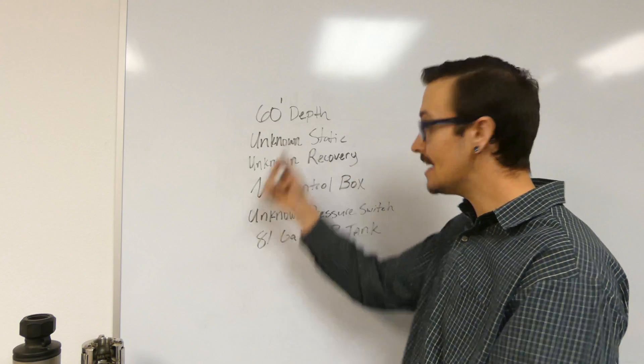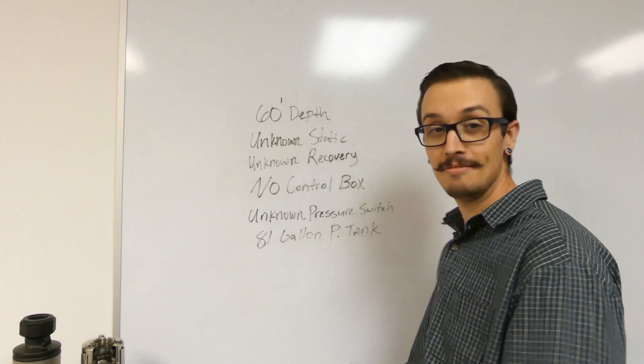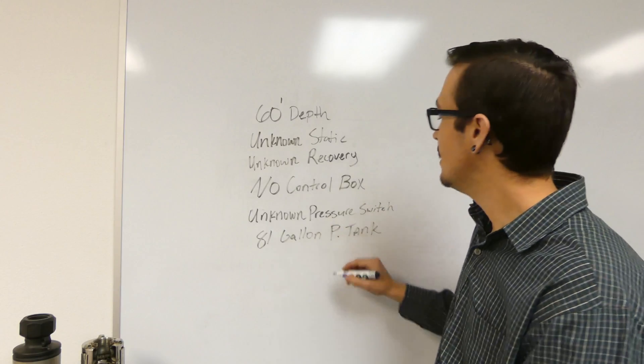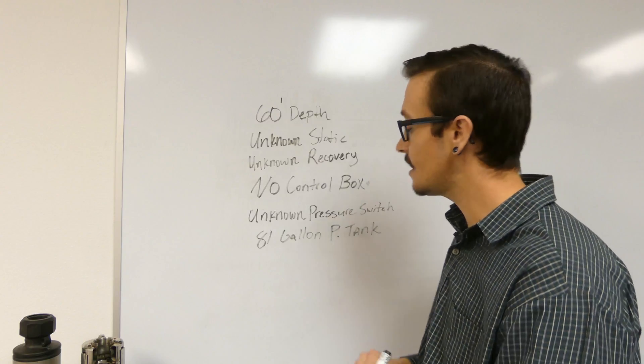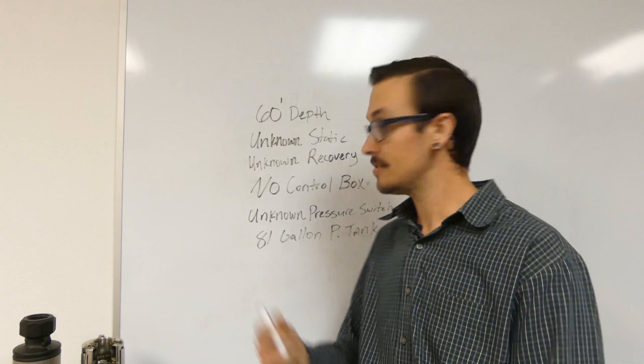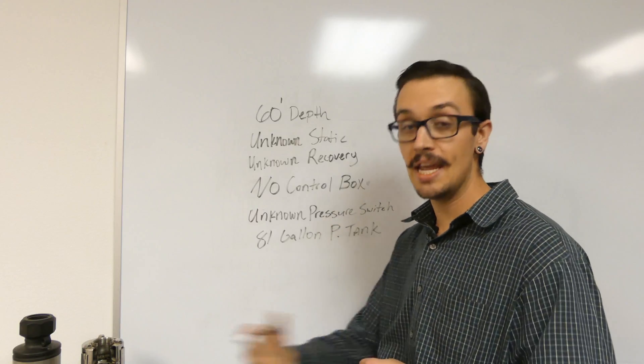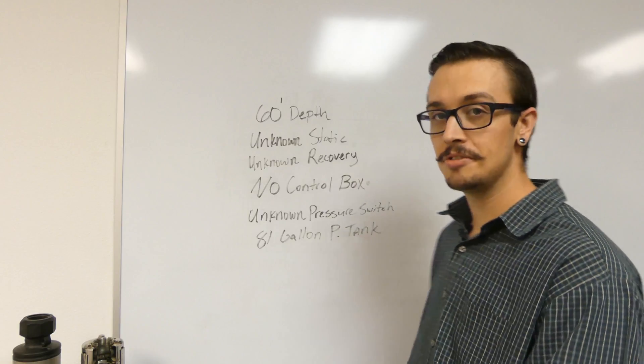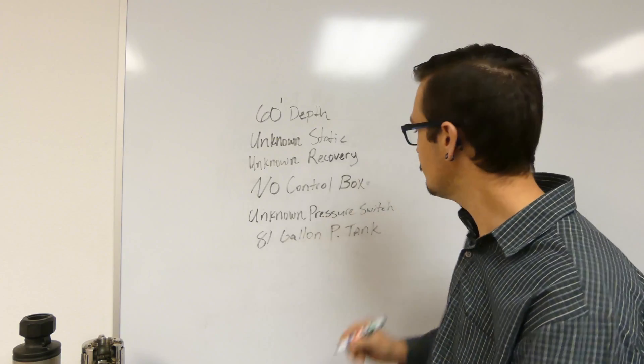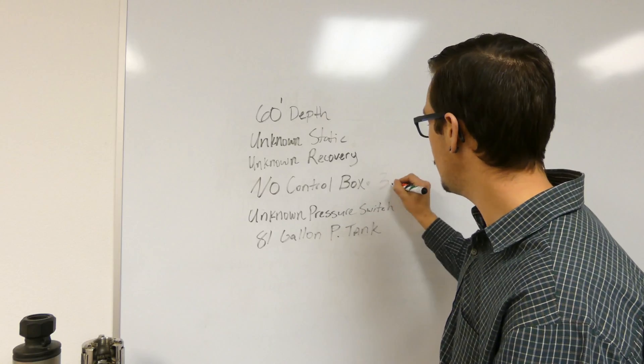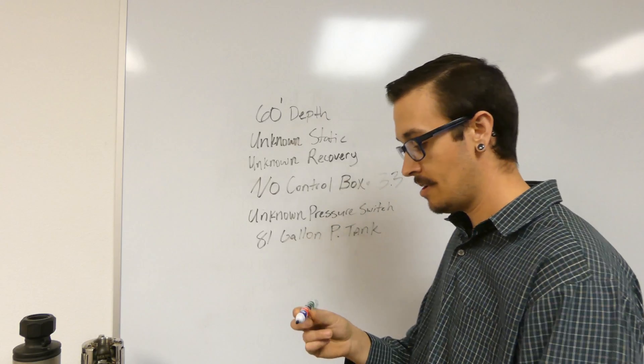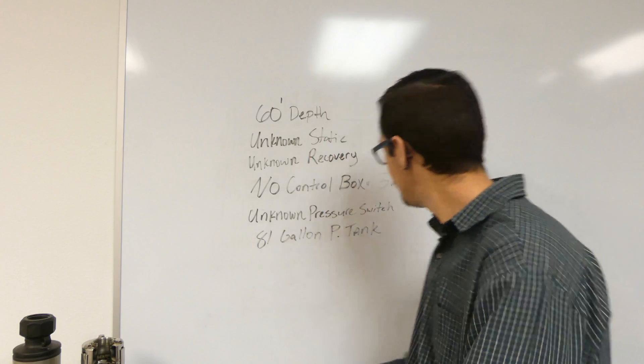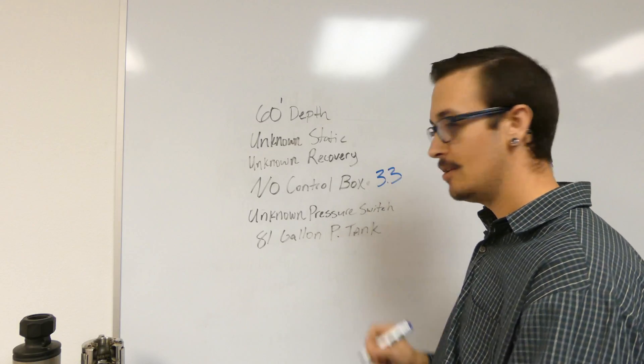So it might seem like you can't figure out what the heck pump you've got, but let's figure it out. Okay, so no control box - how do we address that? Well, we're going to take a resistance reading because in this situation we're going to pretend that the pump's dead and we can't run it to take an amp reading. So we're going to take a resistance reading. We get 3.3 ohms.